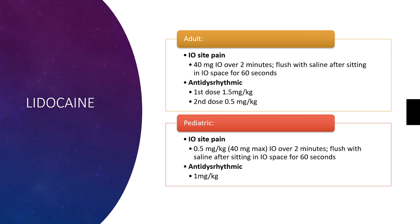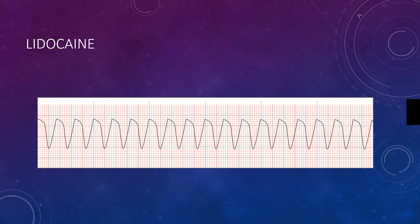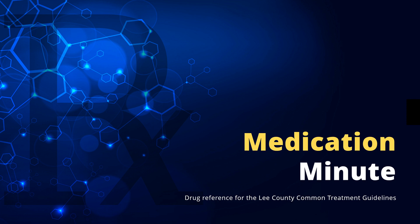The dosage for IO site pain is 40 milligrams IO over two minutes, and you're going to flush that with saline. As an anti-dysrhythmic, the first dose is 1.5 milligrams per kilogram, and the second dose would be 0.5 milligrams per kilogram, in replacement of your two amiodarone doses when treating a shockable cardiac arrest. The pediatric dose is 1 milligram per kilogram. So again, lidocaine is a potential replacement for amiodarone in the shockable arrest. This was Medication Minute.